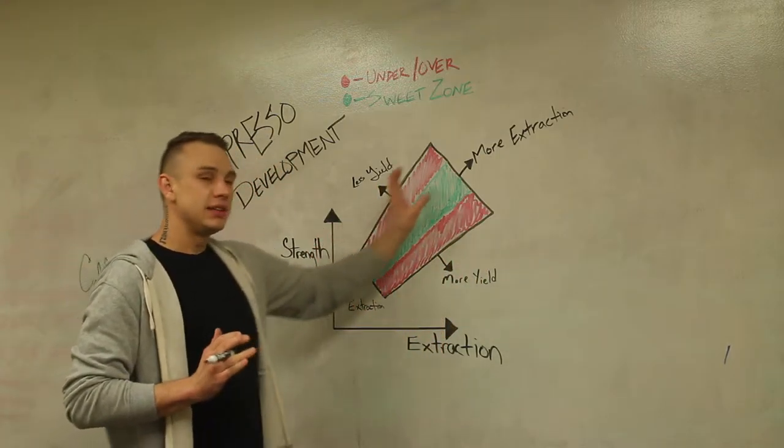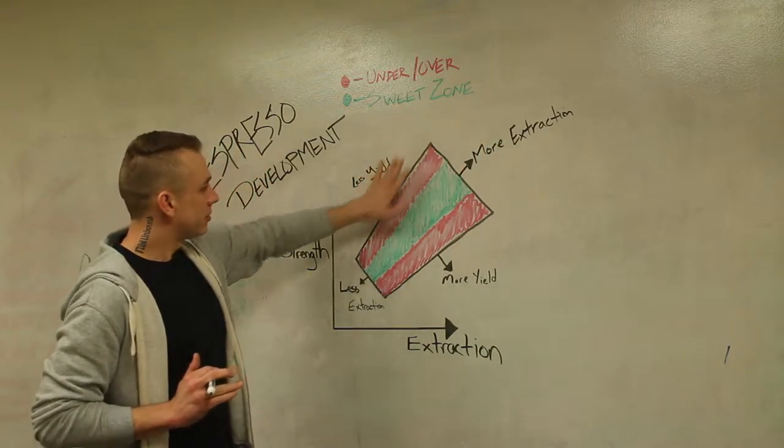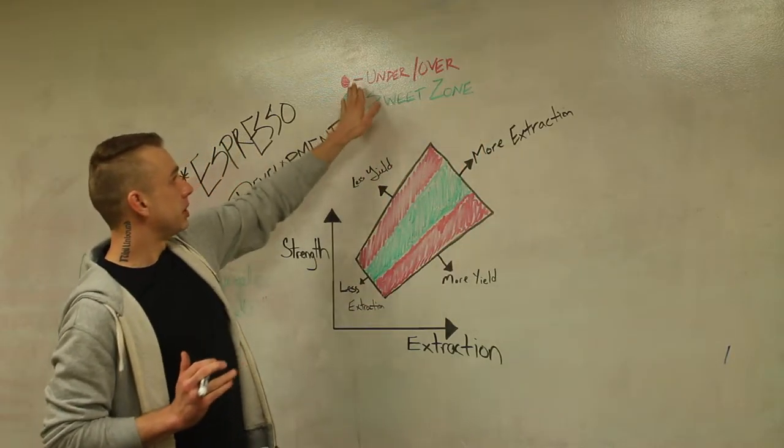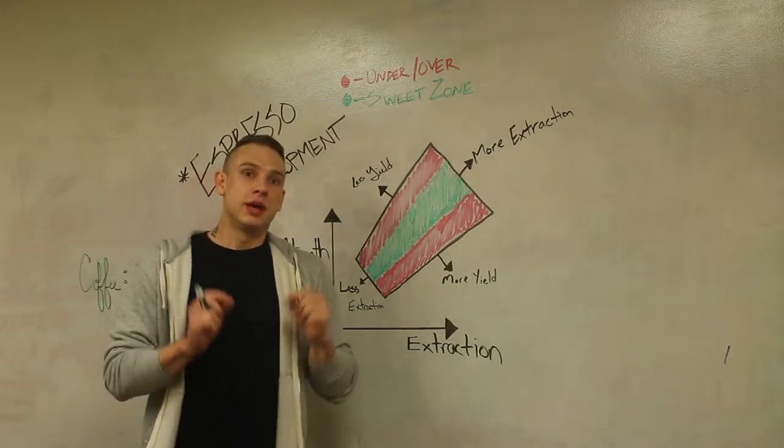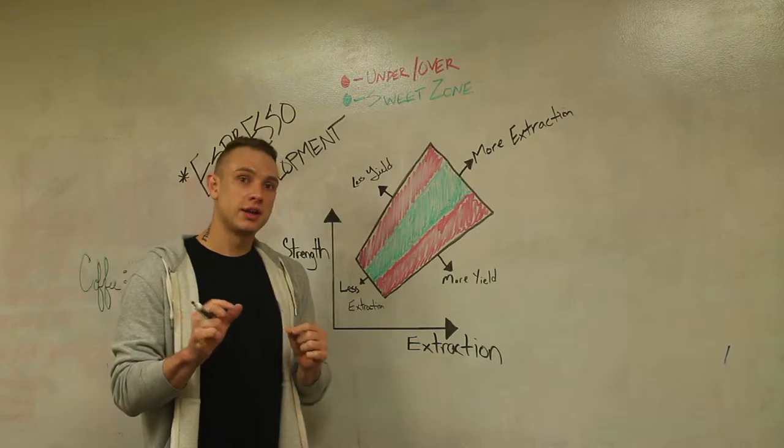It gets bigger and bigger as you get a greater yield, it maintains the same sweet spot. So with that you still have the downfalls of what could be under or over extraction.